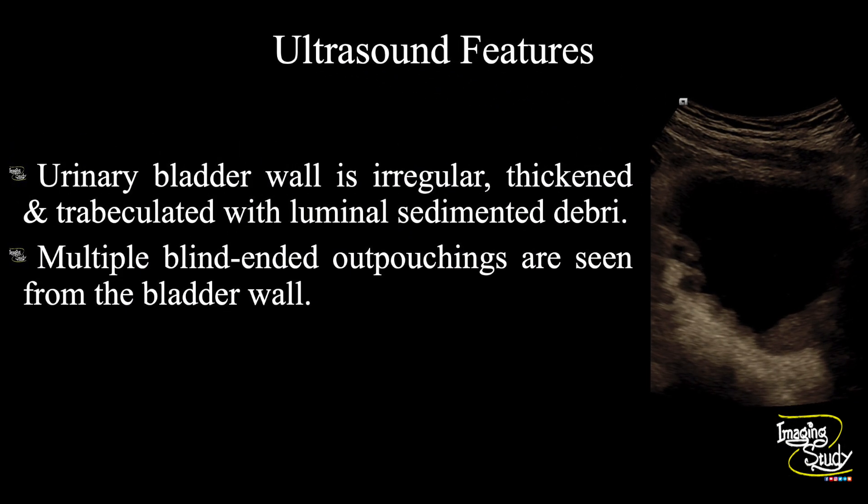In summary, the urinary bladder wall is irregular, thickened, and trabeculated with luminal sedimented debris. Multiple blind-ended outpouchings are seen from the bladder wall indicating diverticula. These features conclude as a case of chronic cystitis with diverticula formation, and the main behind-the-scenes reason should be the enlargement of the prostate.